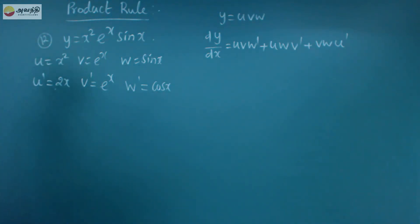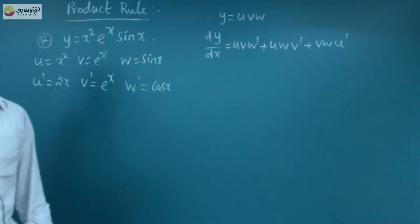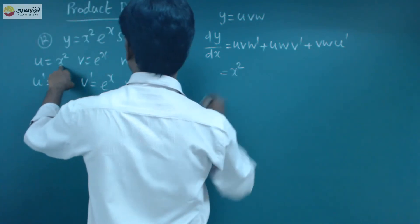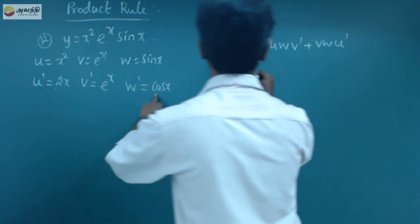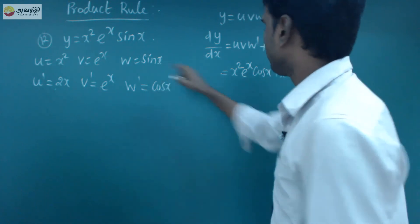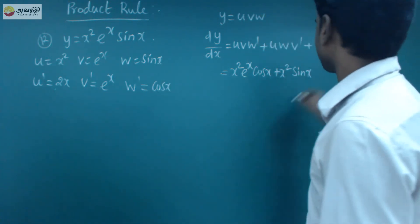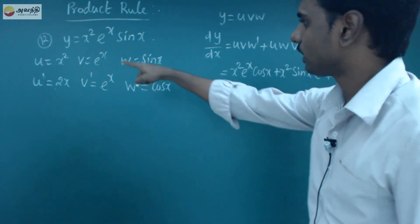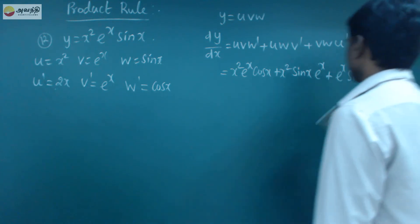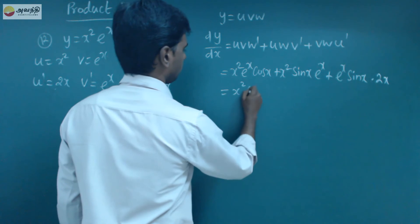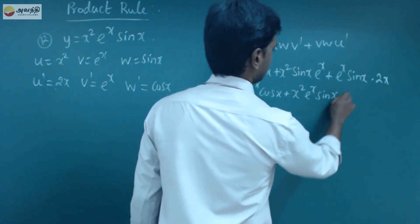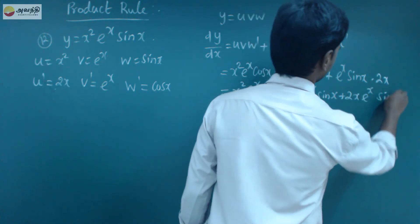So we substitute into the solution. dy by dx equals u times v times w dash — that is x squared times e power x times cos x — plus u times w times v dash — x squared times sin x times e power x — plus v times w times u dash — e power x times cos x times 2x — plus 2x times e power x times sin x.